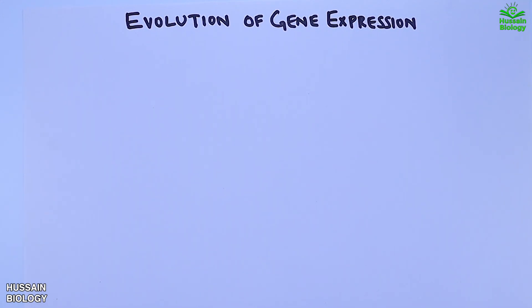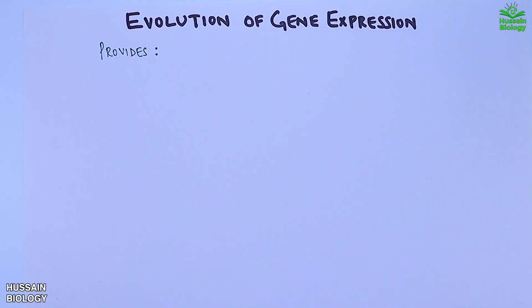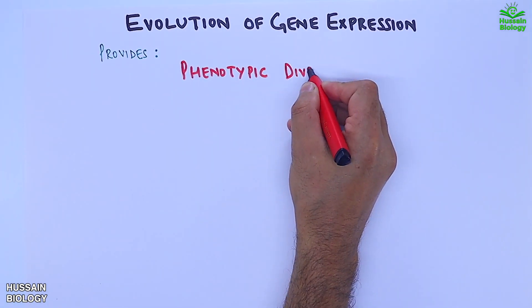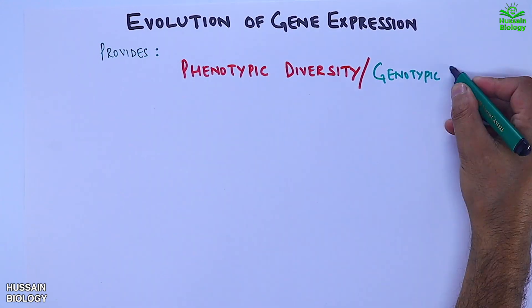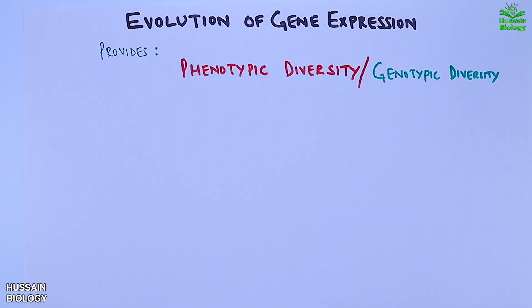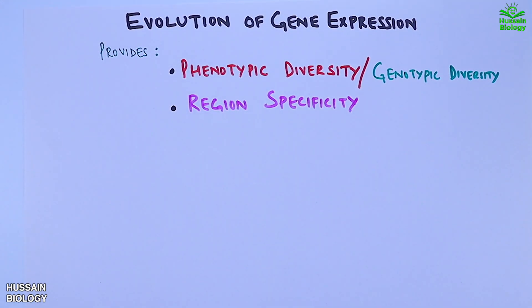The evolution of gene expression provides us some basic concepts: it gives us phenotypic diversity, genotypic diversity, or both, and it also gives us region specificity within the same species.